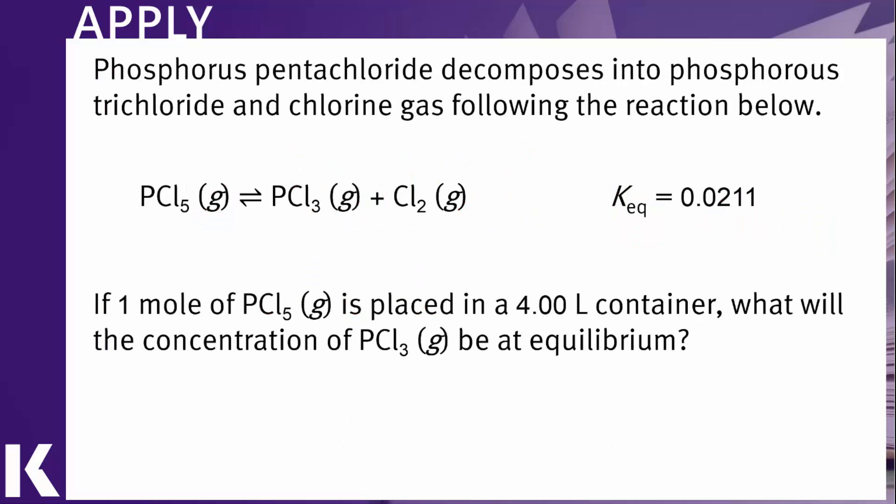Let's take a look at one more example. Here we have phosphorus pentachloride and it's undergoing a decomposition reaction to give us PCl3 and chlorine gas. We have a KEQ of 0.0211. So immediately we can start thinking that this system is a good candidate for trying our simplified calculation process.